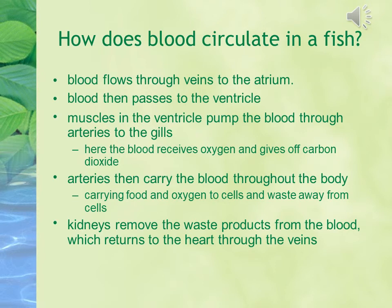Blood flows through veins to the atrium, then passes through the ventricle. Muscles in the ventricle pump the blood through arteries to the gills, where the blood receives oxygen and gives off carbon dioxide. Arteries then carry the blood throughout the body, carrying food and oxygen to cells and waste away from the cells. Kidneys remove waste products from the blood, which returns to the heart through the veins.